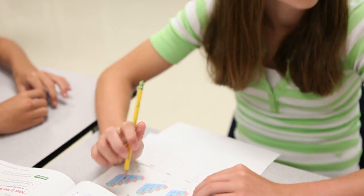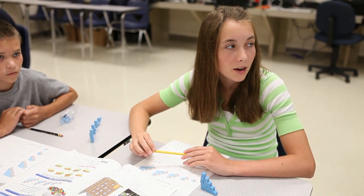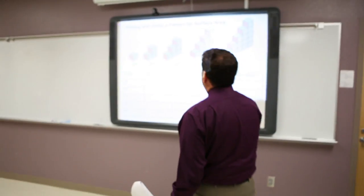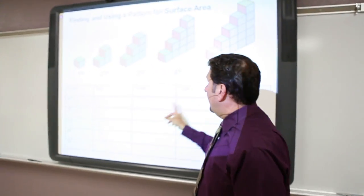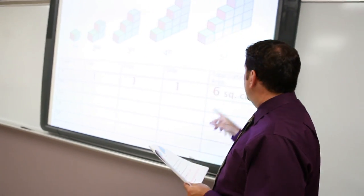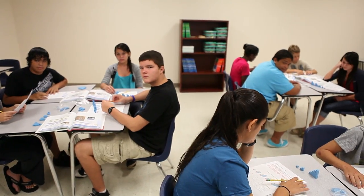Let's bring it together and talk about what you discovered as you were making these cubes and looking for the surface area. Let's start with figure one — just the one cube. Would someone share what you figured out for that first row? I got the top, the front, and the side were all one centimeter. So the total surface area was six square centimeters.